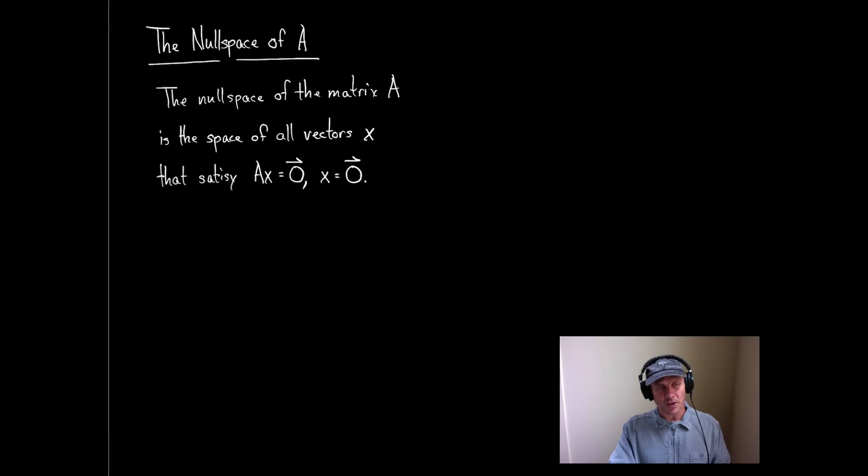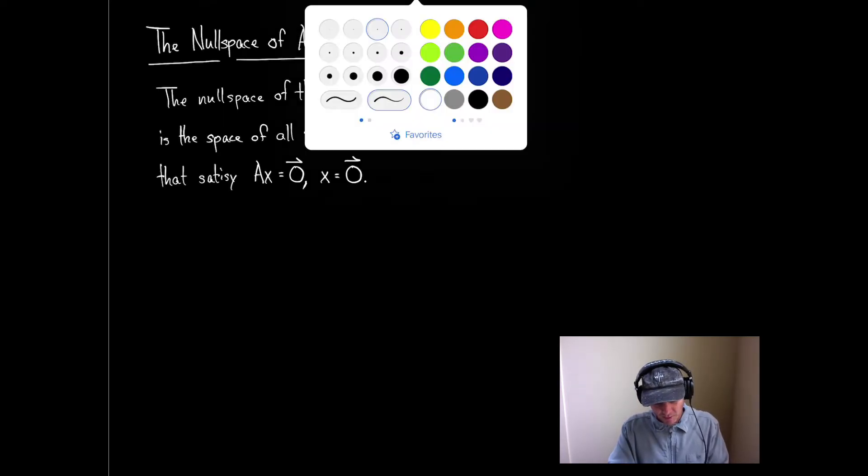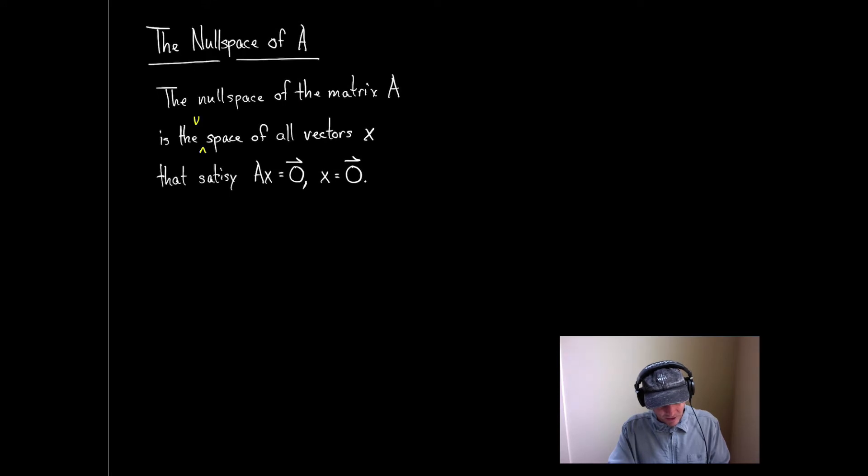Now, what I'd like to do is first let's work with an example so we can get an idea of what we're doing. And then we're actually going to prove that the null space of A is not just a space, it's a vector space. So here we go. Let's consider the matrix A. How about 1, 2, 1, 1, 2, 3. There's the matrix A.